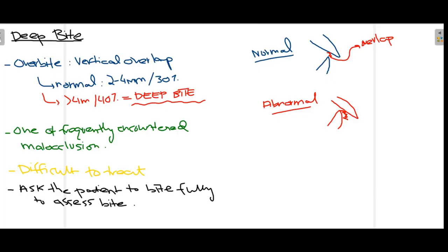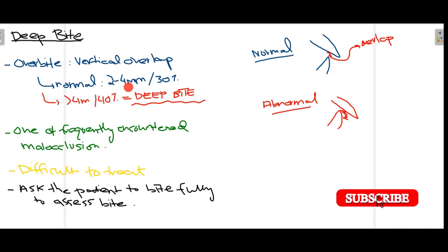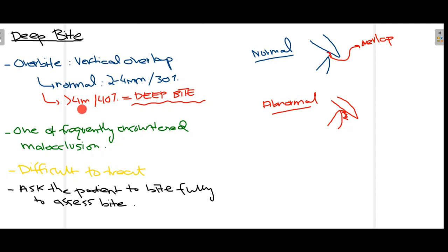Overbite is the vertical overlap between the maxillary incisor and the mandibular incisor. The red shading shows the amount of covering done by the maxillary incisor over the mandibular incisor. This is called overbite when the normal range is 2 to 4 mm, or about 30%. When this overlap goes beyond 4 mm or more than 40%, it is known as deep bite.